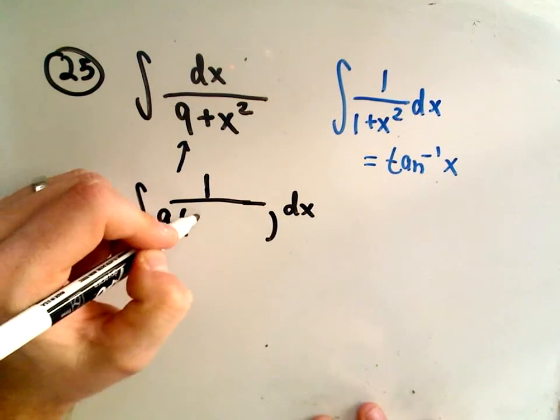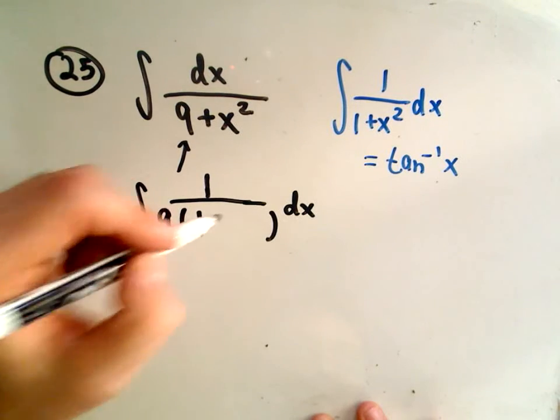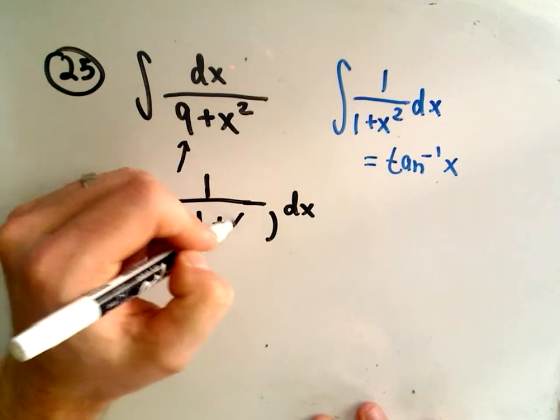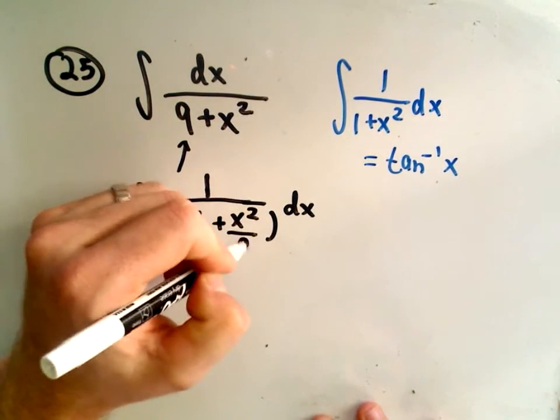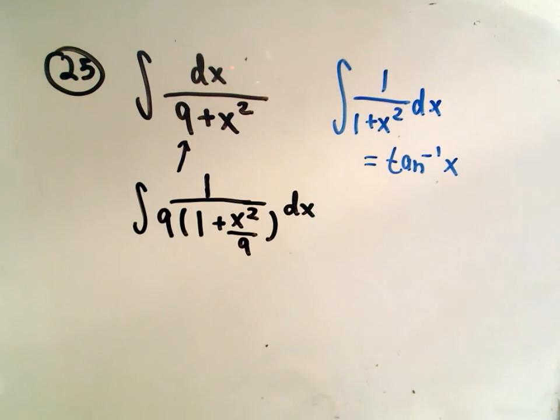So if you pull a 9 out of the first term, well 9 times 1 will give you 9. We would actually need x squared over 9, so that when we distribute, we just simply get our x squared term back.